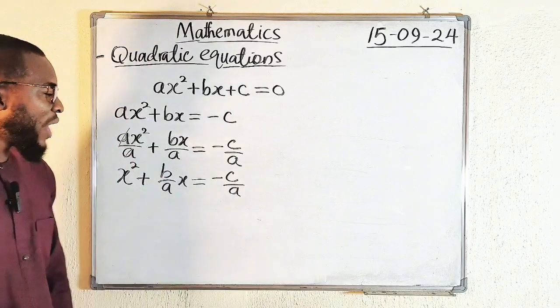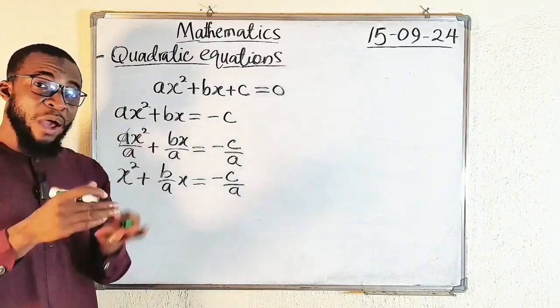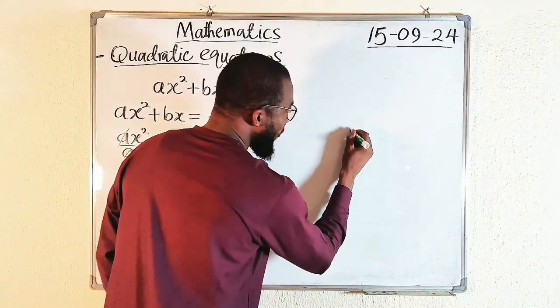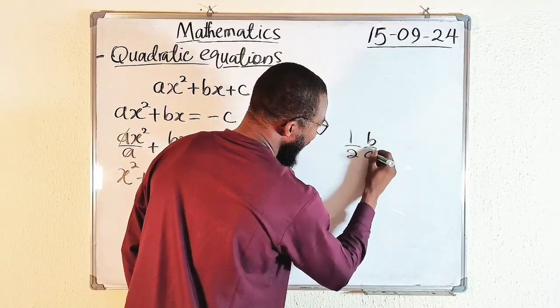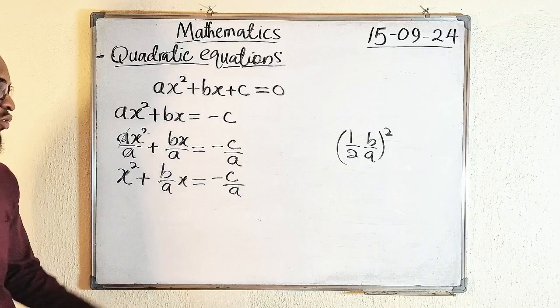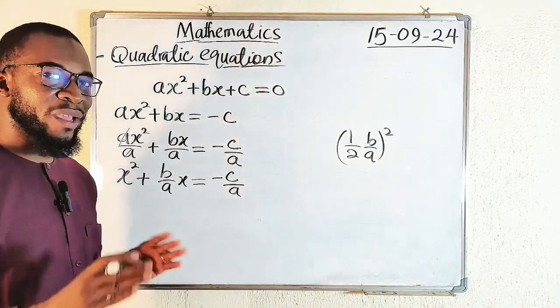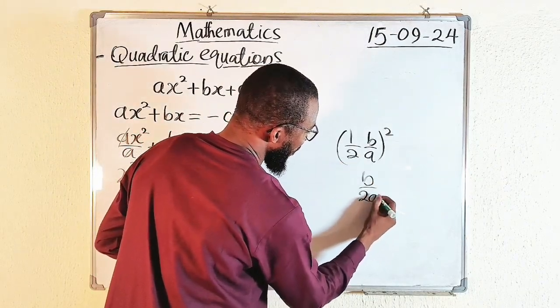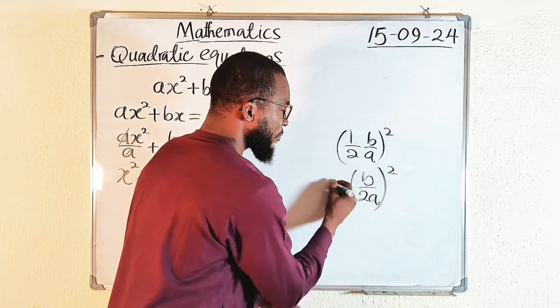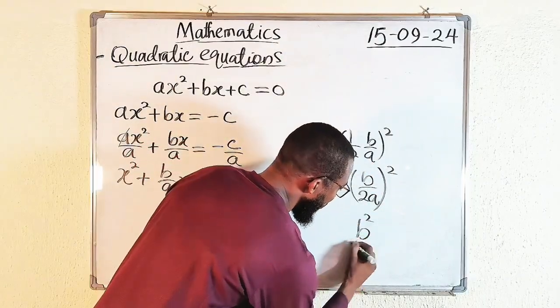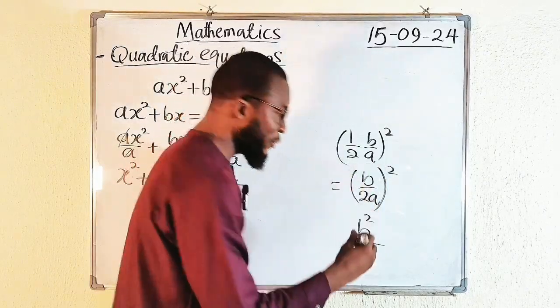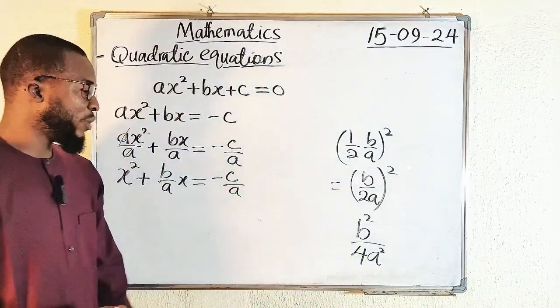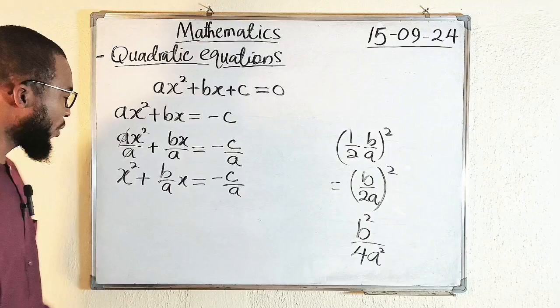So step number three, we are going to add on both sides the square of half the coefficient of x. The coefficient of x is b/a. So half of it, half of b/a all squared, is what we are going to add on both sides to make the left-hand side a perfect square quadratic expression. So 1 times b is b, we have b/(2a). If you square this, b² is b squared, 2 squared is 4, a squared is a². We are going to add b²/4a² on both sides.